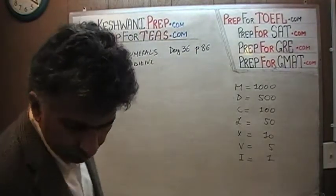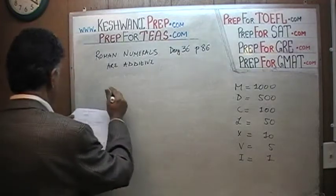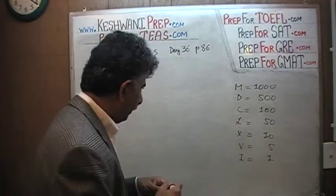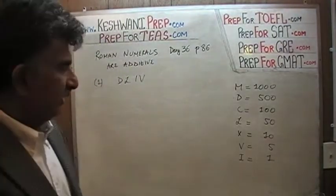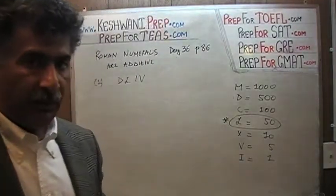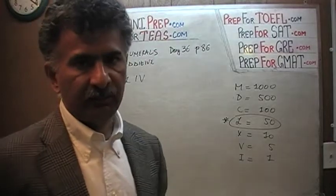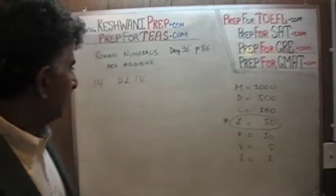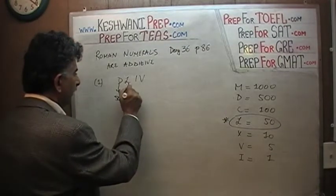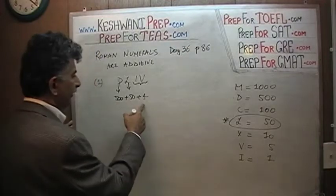Number one — we are given D, L, I, V. The only thing I sometimes have to pause and think about is the 50. The rest are logical: mill means 1000 so M is for 1000; demi mill is 500, hence D; C is a century; X is 10; V and I are very simple. L is the only one you stop and think about, which is 50. So here we have D which is 500, then L which is 50, and then 4. So it's 554.